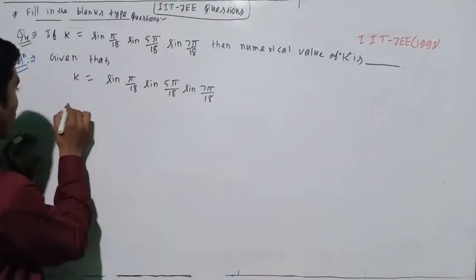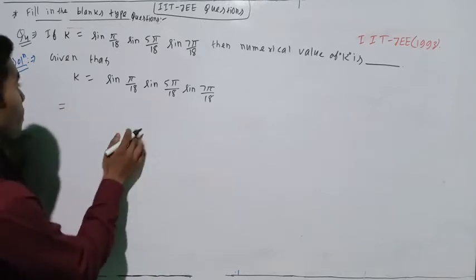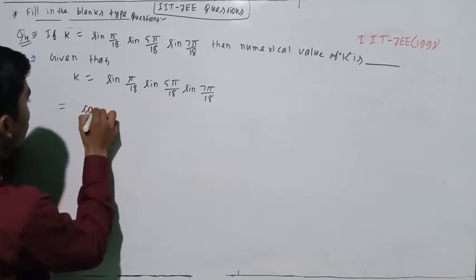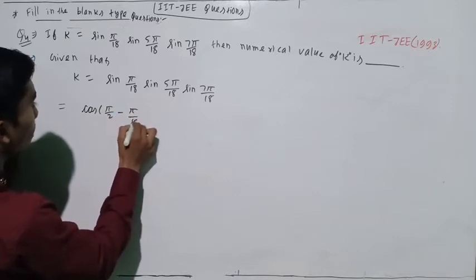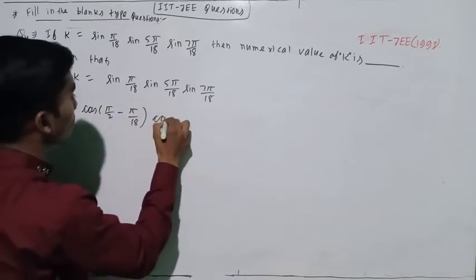If we convert this to cosine form, it will be cos(π/2 - π/18) times cos(π/2